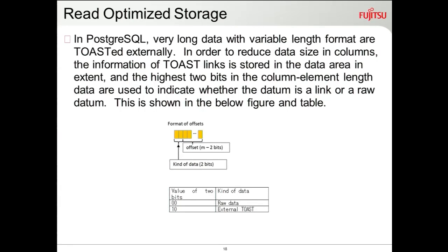PostgreSQL has toasted data: whenever a column's size is large, it toasts it and places it in a different toast table, storing a toast pointer. We want to use that capability here too. To represent whether the data is raw data or external toast, we use two bits in the CRID offset. While retrieving columnar data from the CRID, we refer to this offset to determine whether the data is raw or toasted.